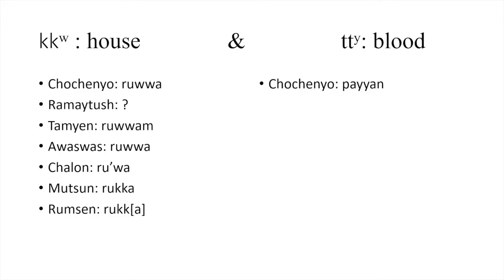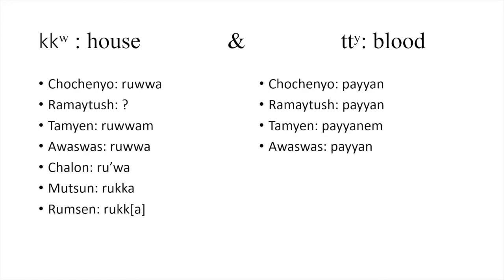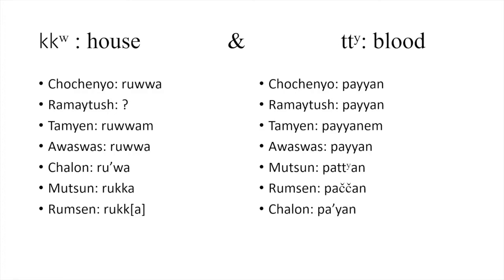Now look at 'blood.' Chochenyo is 'payyan,' Ramaytush is the same 'payyan,' and Tamien is 'payyannem' — the -em ending is characteristic of Tamien. Awaswas is also 'payyan,' same as the first two, and Chalon is likewise 'payyan.' So Northern Ohlone takes the Y sound. Mutsun is 'pathyann' and Rumsen is also 'pathyann.' In Mutsun, T-Y is actually a phoneme — part of the alphabet. So the most notable takeaway here is that Northern Ohlone takes the double-Y while Southern takes the T-Y or CH variant.